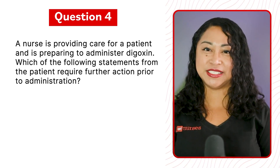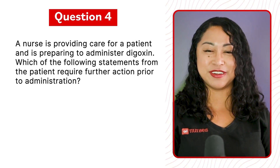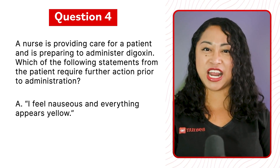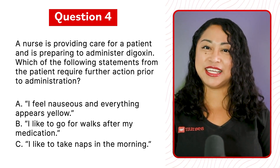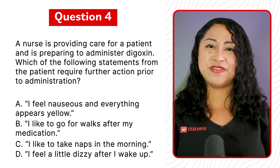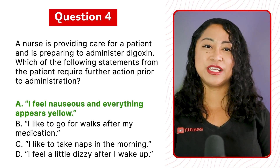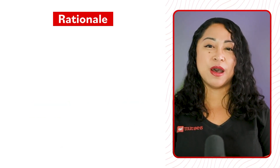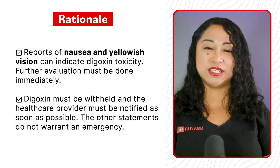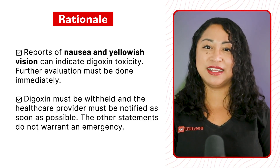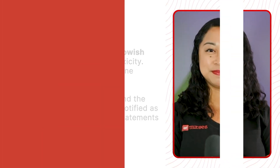Question 4: A nurse is preparing to administer digoxin. Which patient statement requires further action prior to administration? A. 'I feel nauseous and everything appears yellow,' B. 'I like to go for walks after my medication,' C. 'I like to take naps in the morning,' or D. 'I feel a little dizzy after I wake up.' The correct answer is A. Reports of nausea and yellow vision can indicate digoxin toxicity — further evaluation must be done immediately, digoxin must be withheld, and the healthcare provider notified as soon as possible. The other statements do not warrant an emergency.